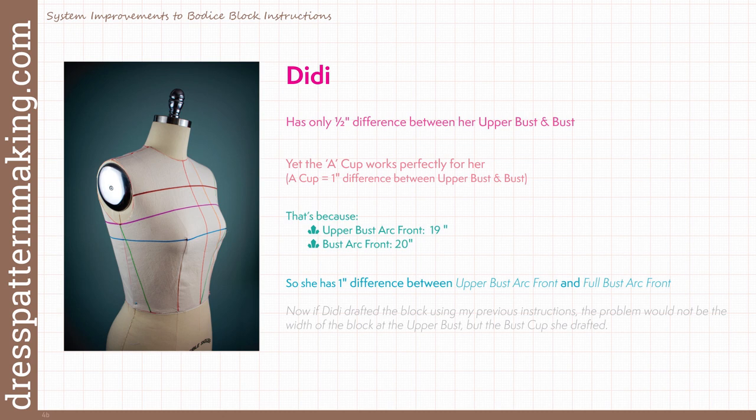So there is one inch difference between her two front arcs. Now, if I drafted Didi's block using my previous instructions, the width of the block at the upper bust would not be the problem. The problem would have been that she would think she needs less than an A cup and draft to less than an A cup, and the cup would be insufficient — the angle of the bust cup would be insufficient. It would be the bust arc that makes the difference for her.